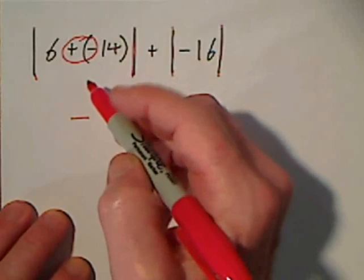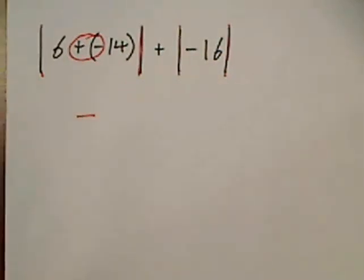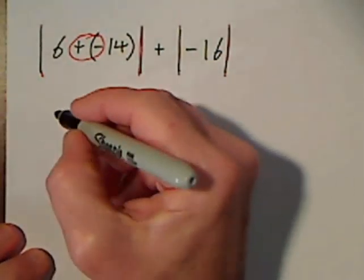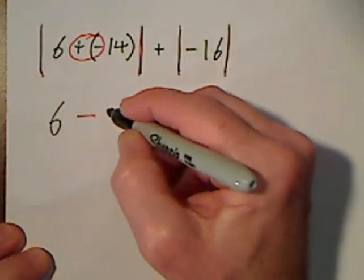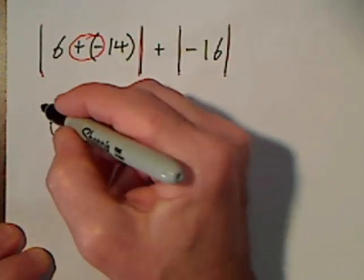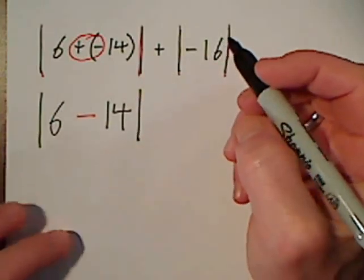Positive times a negative is negative, and then I'll bring down whatever I haven't touched, which is the 6, the 14, and I still have not taken the absolute value.